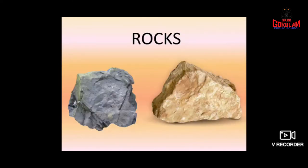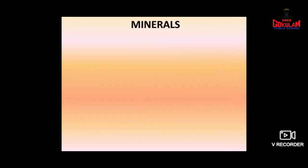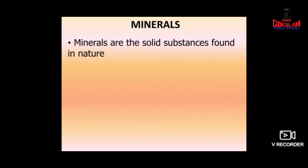Now children, when you look at rocks closer with the help of a magnifying glass — it is just like a lens through which we can see an object more bigger — you can see some grains present on the rock. These grains are called minerals. What are minerals? Minerals are the solid substances found in nature.